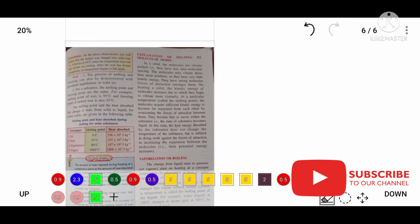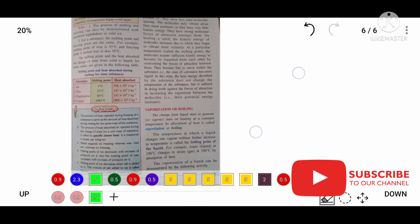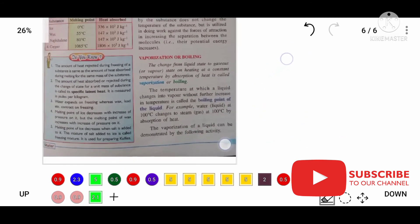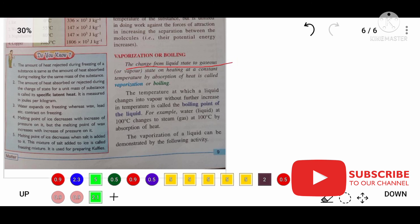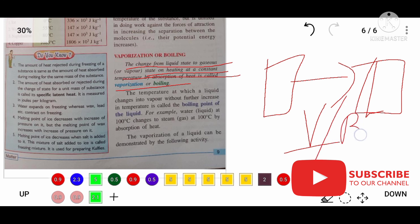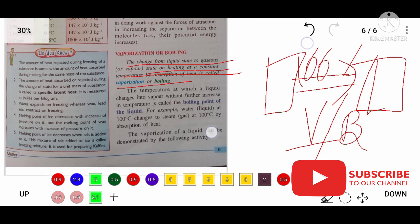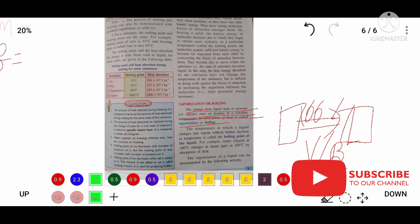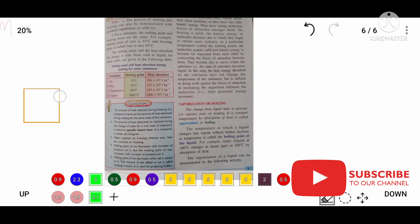Vaporization or boiling is the change of state from liquid to gaseous state by absorbing heat. It takes place at 100°C. The remaining topics will be discussed in the next part of the video.